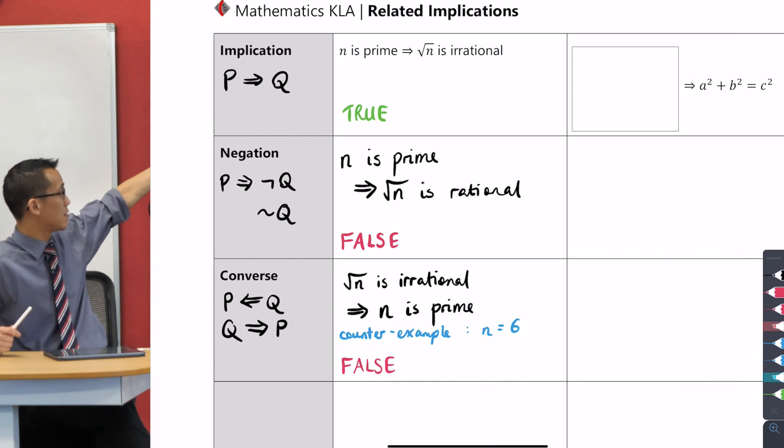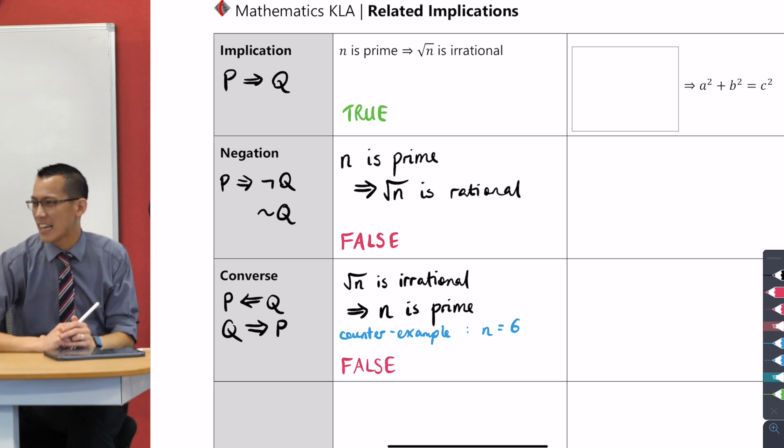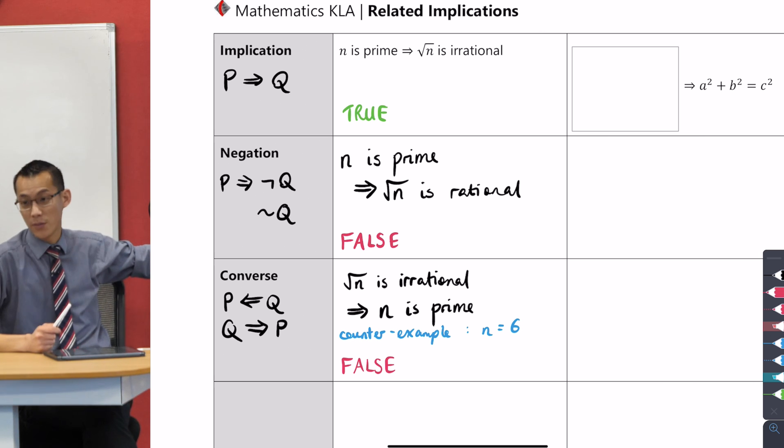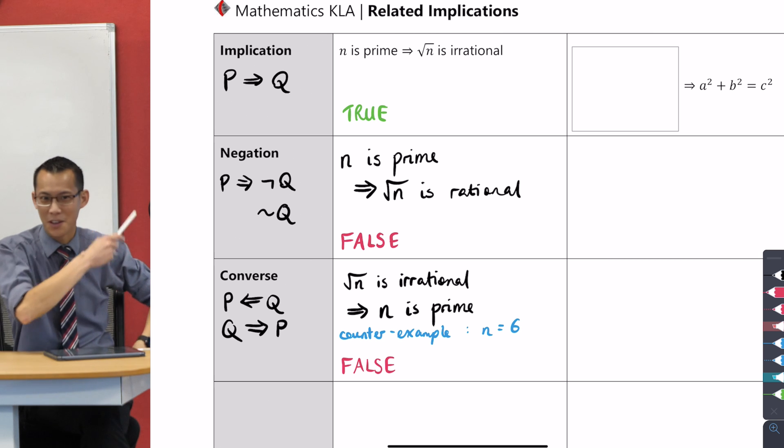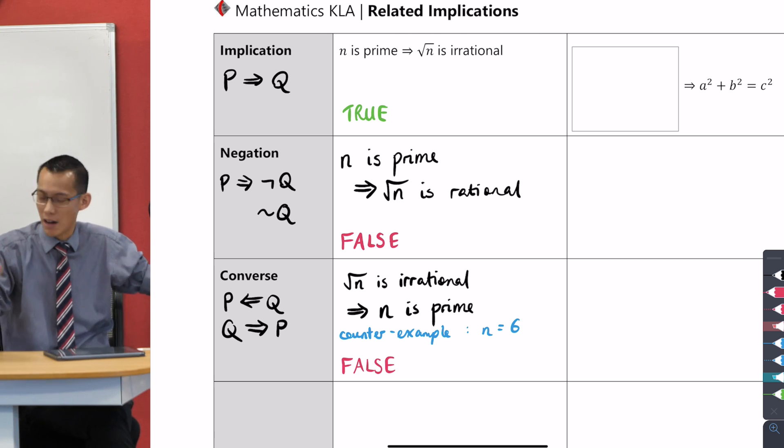Right, now this is really important because if you have a look here, we know that the implication being true means the negation is false. What does it say about the converse? Well it doesn't guarantee anything. In this case just because the first statement was true, its converse was false, but you'll see in a second as we can go across the other columns, sometimes it is true, so it's kind of uncertain.